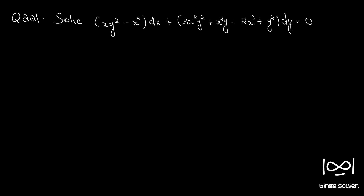Question number 221. Solve: (xy² - x²)dx + (3x²y² + x²y - 2x³ + y²)dy = 0. The given differential equation is in the form M dx + N dy = 0. We will first check whether the differential equation is exact using the formula ∂M/∂y = ∂N/∂x.